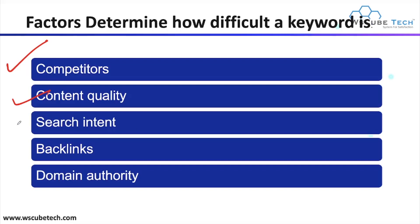The next factor is search intent. You have to understand what the search intent is for any particular keyword. If your search intent is clear, the keyword difficulty is low. But if your search intent is very generic and not clear — for example, very short or broad terms — you have to put more effort because the search intent is unclear.